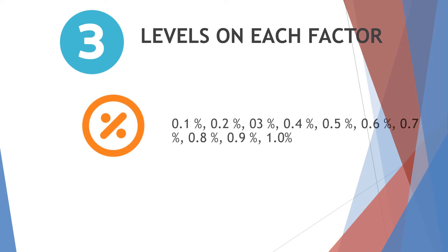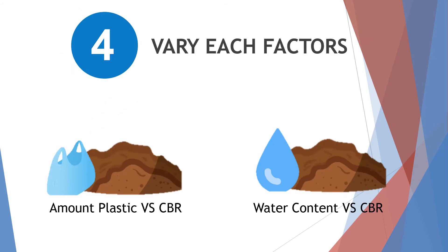We then set the values of each run of the experiment. Fourth, we vary each factor on the output response while letting the other variable remain constant. In our experiment, we add different amounts of plastic by weight of soil to the soil sample at a constant water content and examine its individual effect on CBR values. Likewise, we also vary the amount of water on the soil sample at a constant percent plastic concentration and observe the possible effect on CBR values.